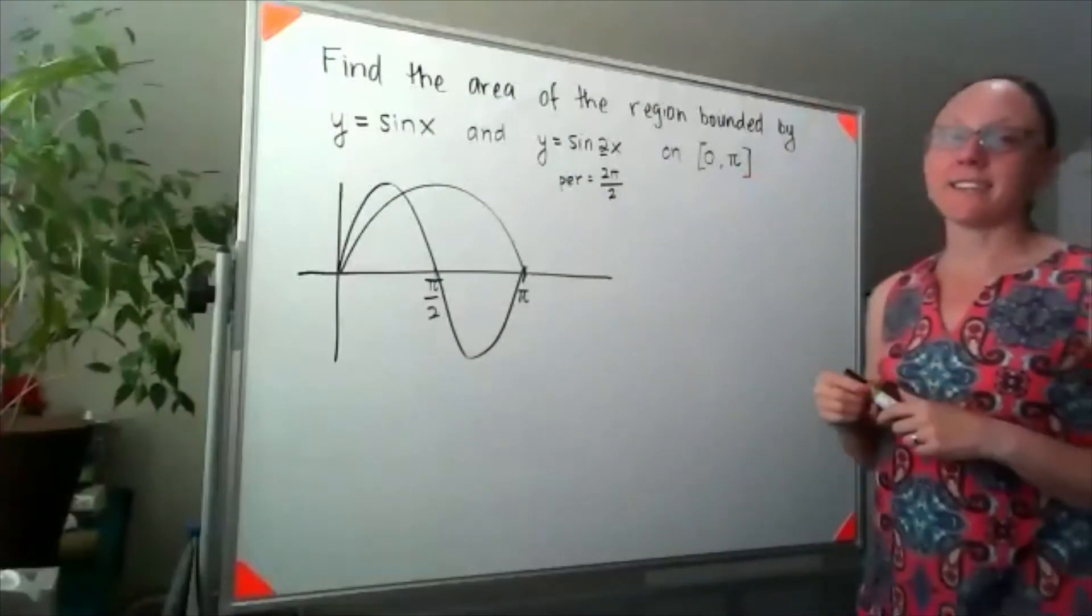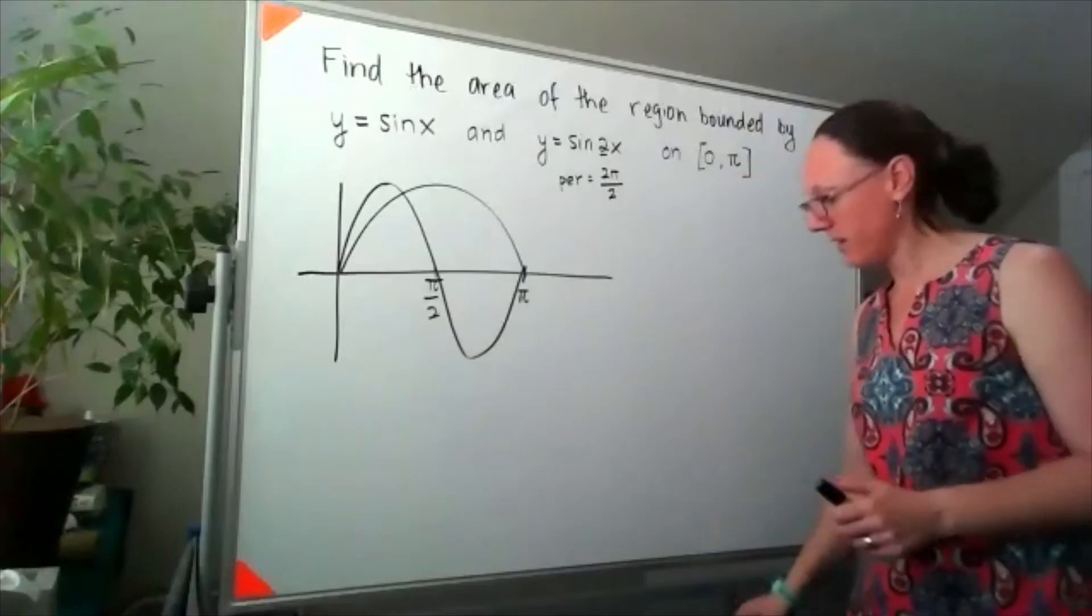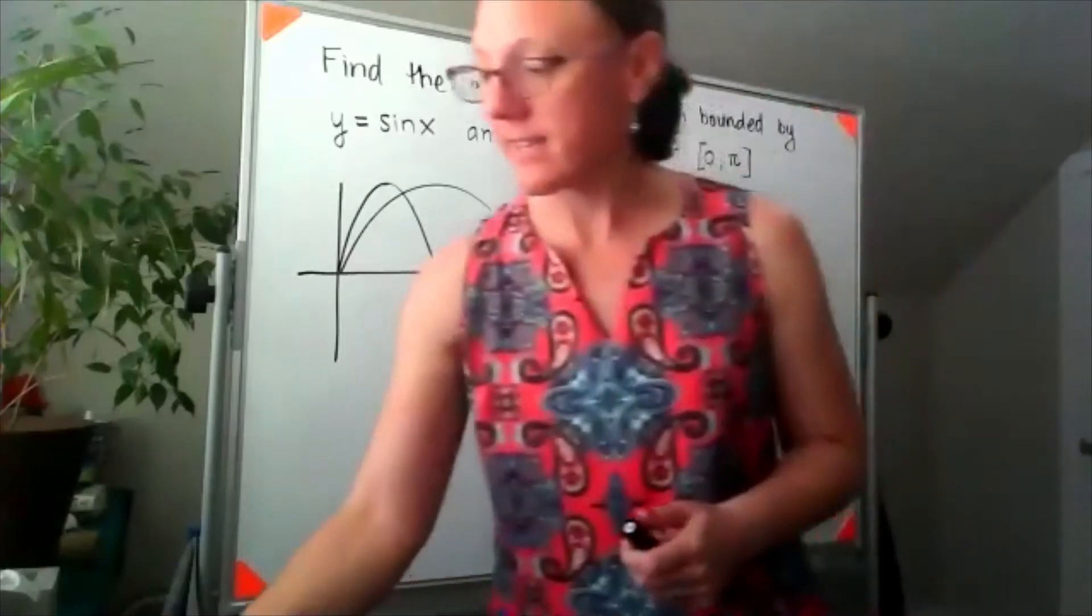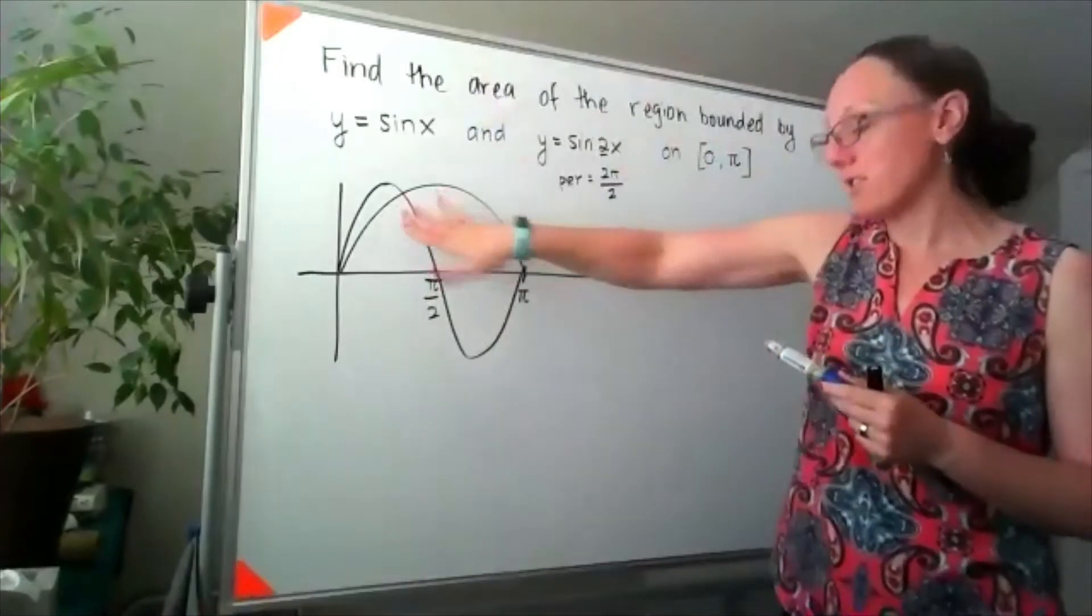Because I asked us to find the area of the region bounded by the two graphs, we actually have a place where our top and bottom functions swap. In this first region...